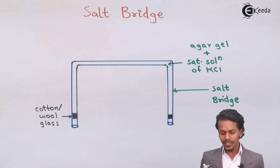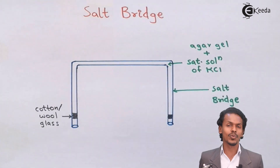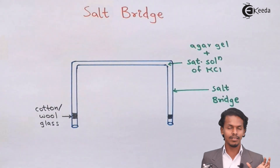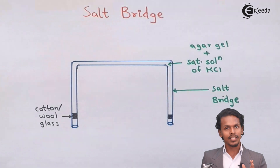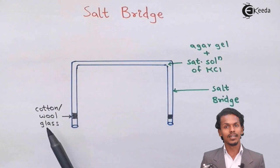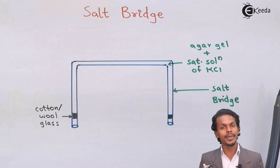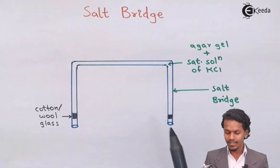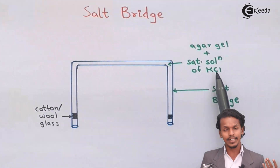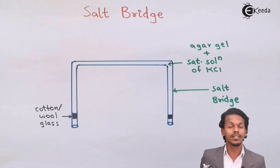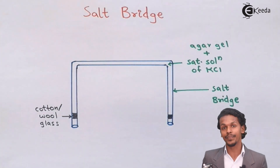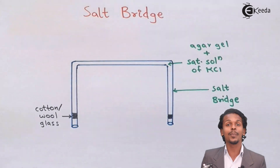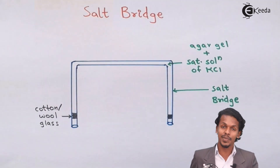The salt bridge contains a saturated KCl solution. Even when this salt bridge is dipped into the two half cells — one part in ZnSO4 solution and the other in CuSO4 solution — the saturated KCl solution does not react with ZnSO4 or CuSO4, and it does not undergo oxidation or reduction. This is the main reason why a salt bridge is used.